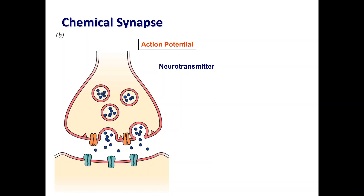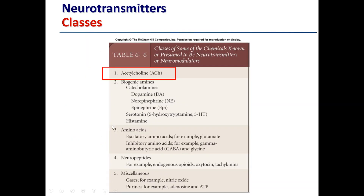The action potential passes down through the T-tubules, which are linked to the sarcoplasmic reticulum, allowing release of calcium. Calcium binds to troponin, removes tropomyosin blocking, and allows myosin-actin interaction and a cross bridge to be formed — referring back to lectures earlier in the semester. The key neurotransmitter to remember here is acetylcholine.